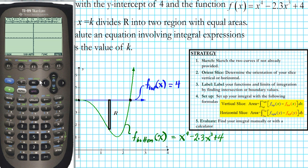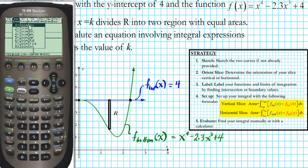So that's the top function f(x) = 4, and the bottom function is the fourth-power polynomial. Now we're going to use the zoom box option — found under F2 — to get a nicer view of the region we want to find the area of. The zoom box creates a window so you can zoom into the particular contents of that window.